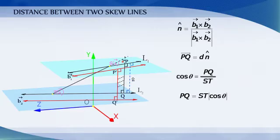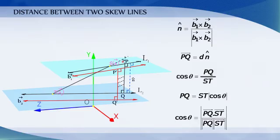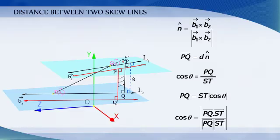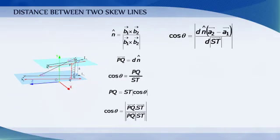The angle between two vectors is given by cos theta equals modulus of PQ vector dot ST vector divided by modulus of PQ vector times modulus of ST vector. Substituting the corresponding values, PQ vector dot ST vector equals D times unit vector N times vector A2 minus vector A1 divided by D times modulus of ST vector.